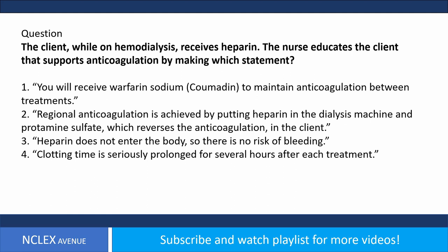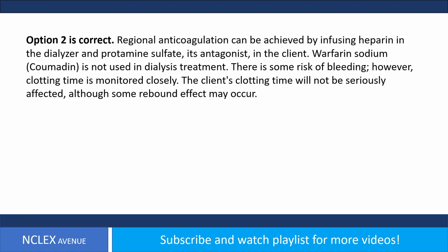Answer. Option 2 is correct. Regional anticoagulation can be achieved by infusing heparin in the dialyzer and protamine sulfate, its antagonist, in the client. Warfarin sodium (Coumadin) is not used in dialysis treatment. There is some risk of bleeding; however, clotting time is monitored closely. The client's clotting time will not be seriously affected, although some rebound effect may occur.